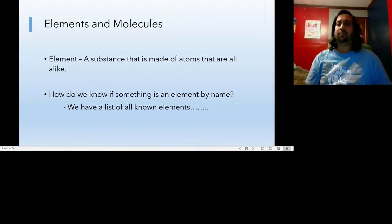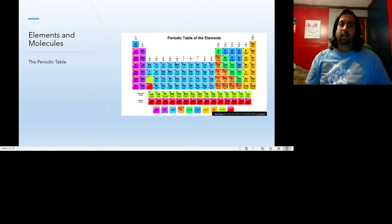So without further ado, let's review what elements and molecules were. We'll start with elements. If you have an element, you have a substance that's made up of atoms that are all alike or all the same. How do we know if we have something that is an element? Well, fortunately, we have a list of all known elements, and that list is known as the Periodic Table of Elements, also known as Mendeleev's Periodic Table of Elements, named after the Russian chemist who devised the idea.